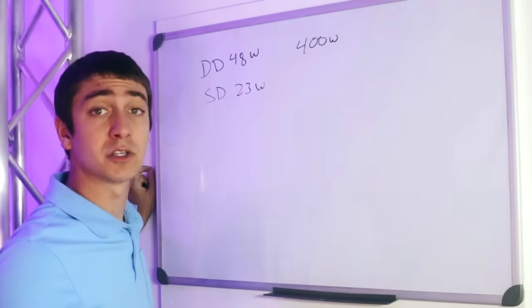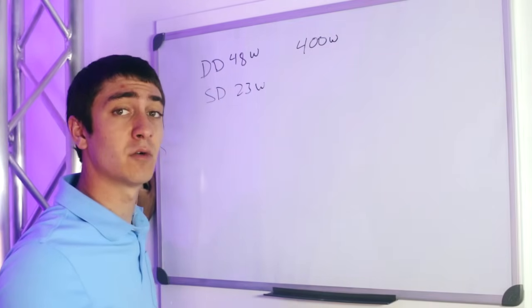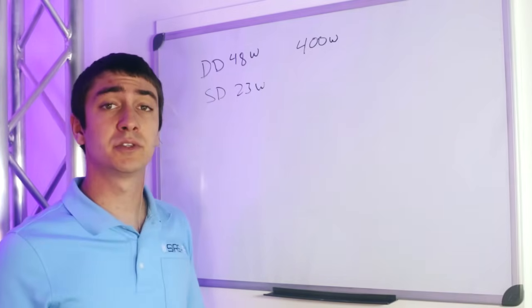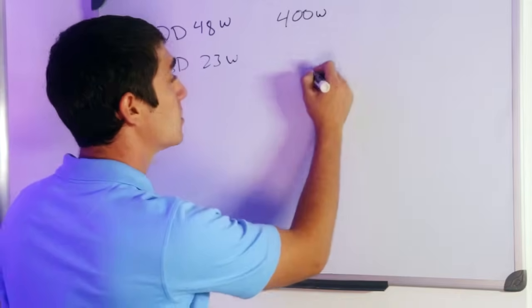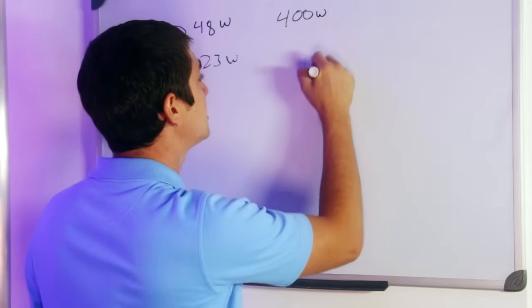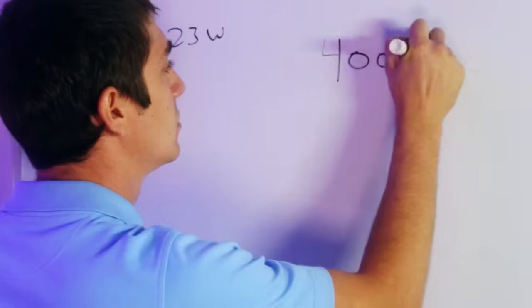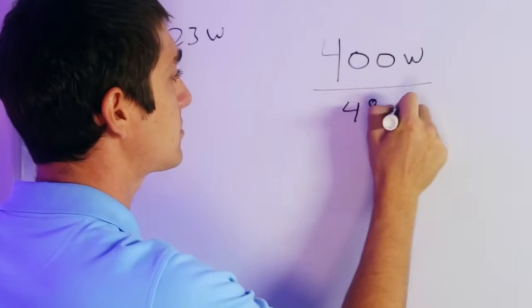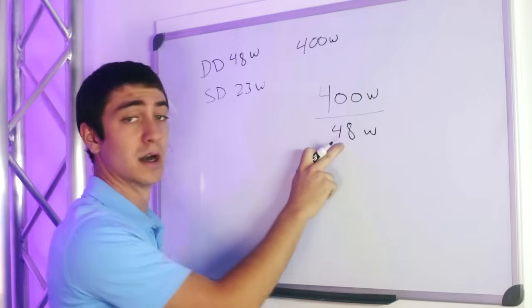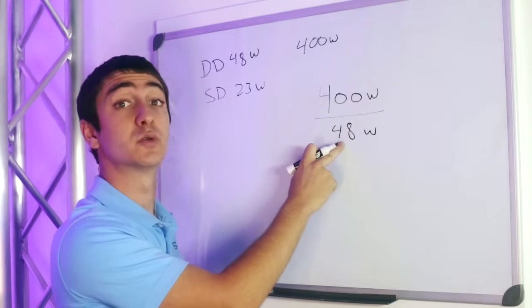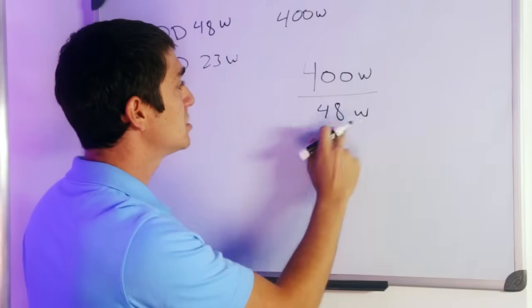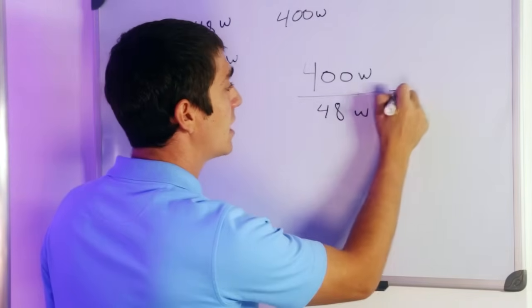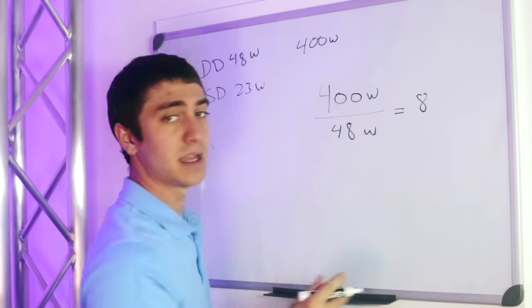So now that you know your power supply capacity and now you know what your strips consume, then you can figure everything out using very simple math. So the way you do it, you get the capacity of the power supply, which is 400 watts, and you divide it by the 48 watts, which is what your strip is consuming. Once you do this basic math problem, it comes out to about 8, give or take. So that is 8 dual density strips that you can put on there.